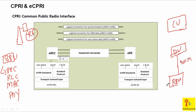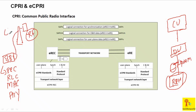Nowadays with O-RAN, the distributed unit can be 40 kilometers apart from the RH. The CU is also there as a centralized unit. The interface between DU and RH is the fronthaul interface, and between DU and RH we are using the CPRI interface.